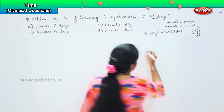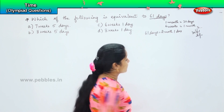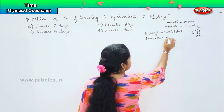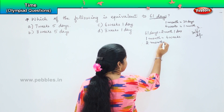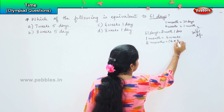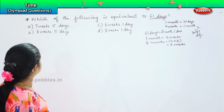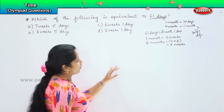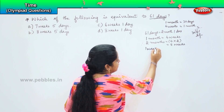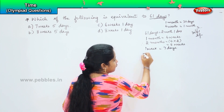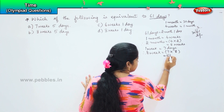So we can write this as two months and one day. One month equals four weeks, therefore two months equals four times two, which is eight weeks. Now, one week equals seven days, so eight weeks will be seven times eight, which is 56 days.